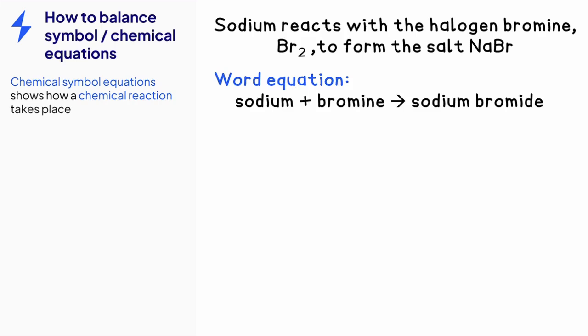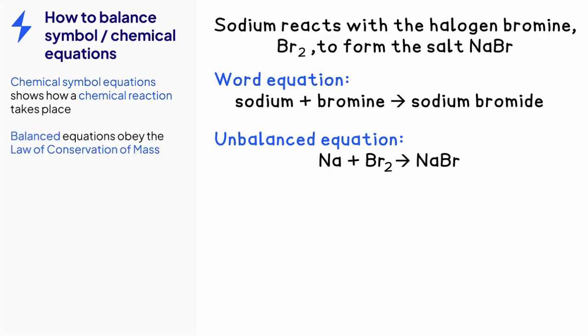Replacing the words with the chemical formulae gives you the unbalanced equation Na plus Br2 arrow NaBr. Chemical symbol equations should have the same number of each atom on either side of the equation.